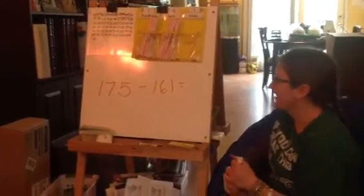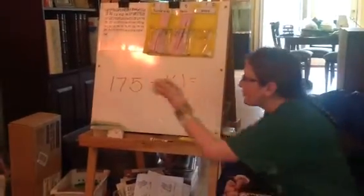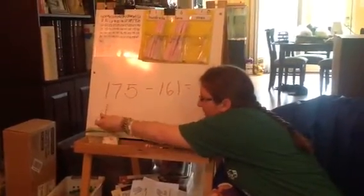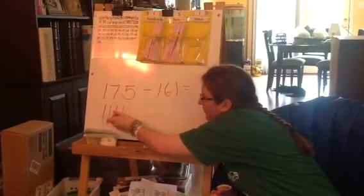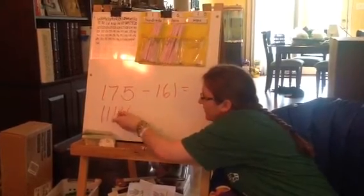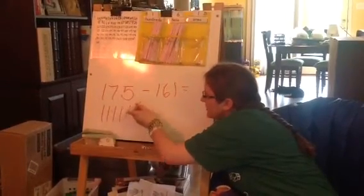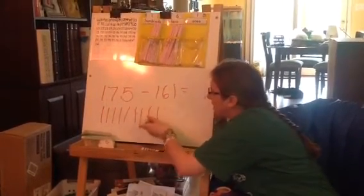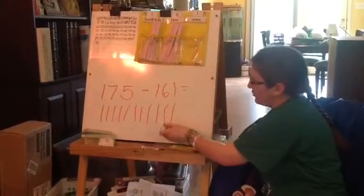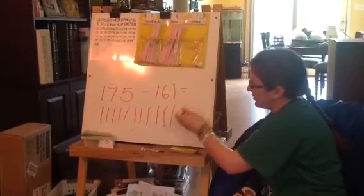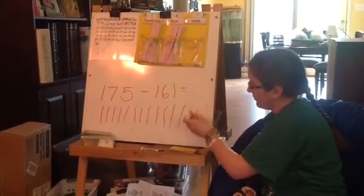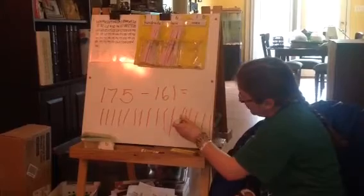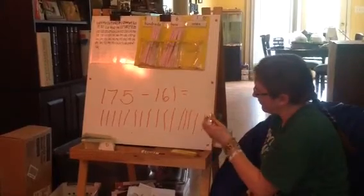Okay. First I'm going to draw 175. I'll count out my tens: 10, 20, 30, 40, 50, 60, 70, 80, 90, 100, 110, 120, 130, 140, 150, 160 — and then 175.